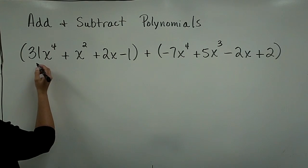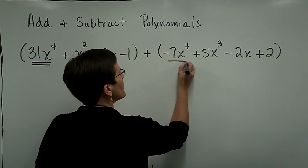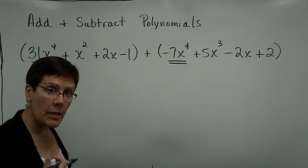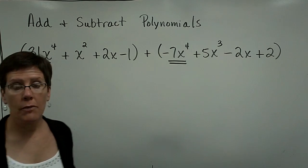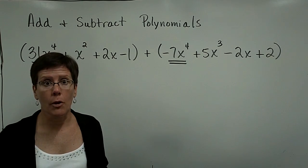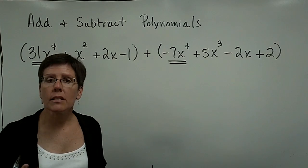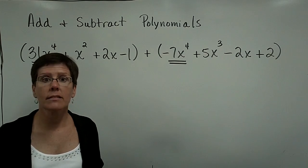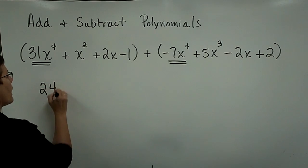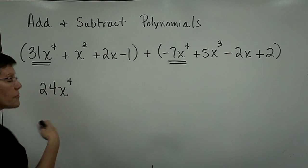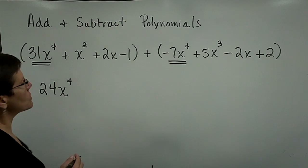So in these two polynomials, in terms of the highest degree, the one that has a 4 as an exponent, x to the 4th power, these two are my like terms. So I have to add the 31 and the negative 7, I'm sorry. Or basically take 31 and subtract 7 and get 24x to the 4th power. And that would be the first term because it has the highest degree.